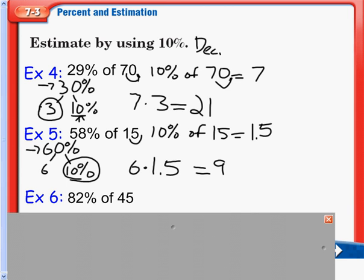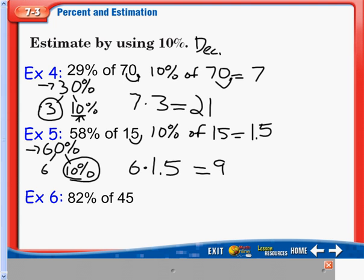Our last example here is 82% of 45. So 82% is close to 80%, which is 8 times 10%. And another way you can realize is just the first digit here will give us the number we are taking to multiply. 10% of 45 is going to be 4.5.